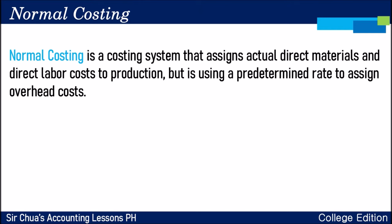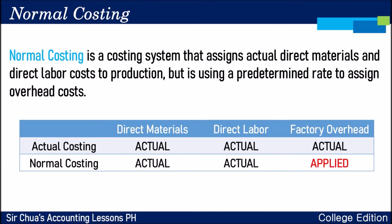Remember, in normal costing, direct materials are actual, direct labor is actual, but when it comes to overhead, we only apply an amount based on our predetermined rates. If we compare actual costing and normal costing, the only difference is on the side of overhead, because factory overhead in normal costing is applied.